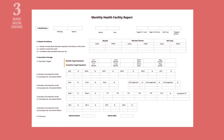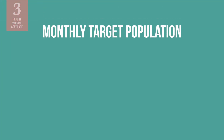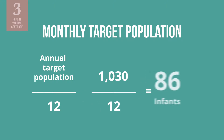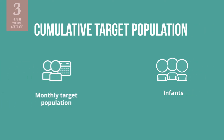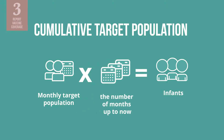Next, report your vaccine coverage. This section requires doing some calculations. Your monthly target population can be found by dividing your annual target population by 12. For example, if a health facility has 1,030 infants in its catchment area, the monthly target population is 1,030 divided by 12, or 86 infants. The cumulative target population is the monthly target population for one month multiplied by the number of months up to the current month.